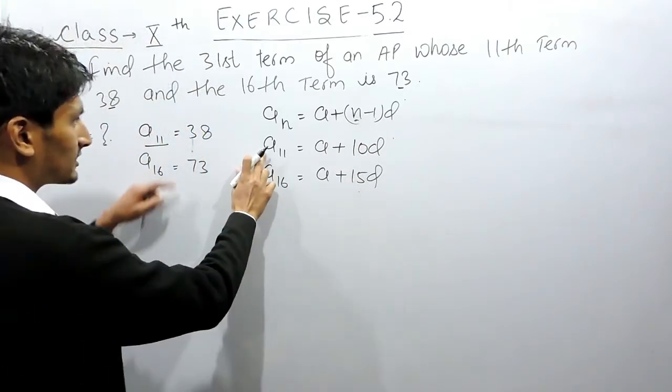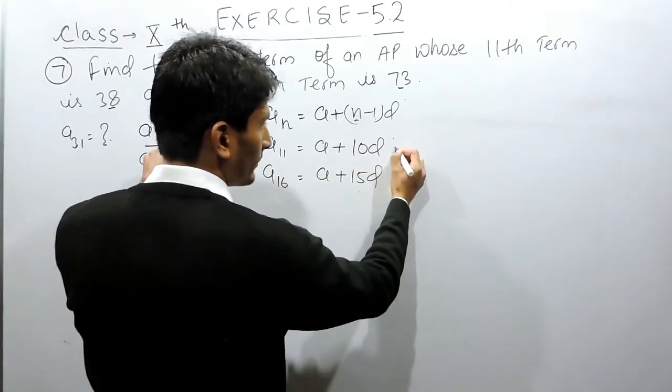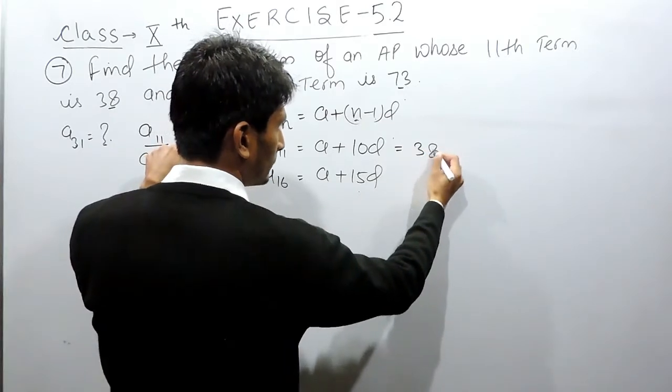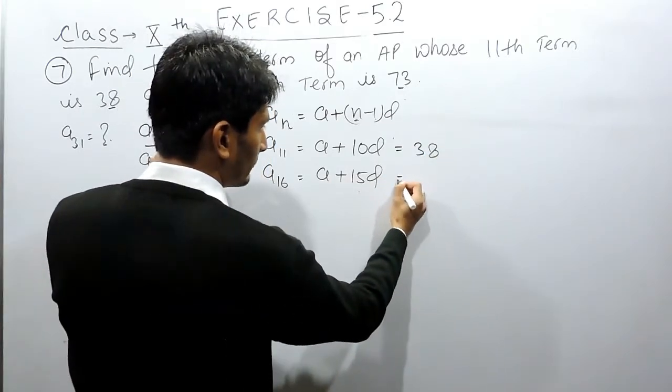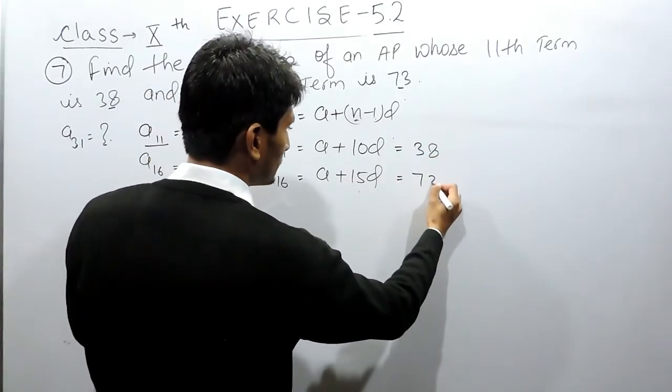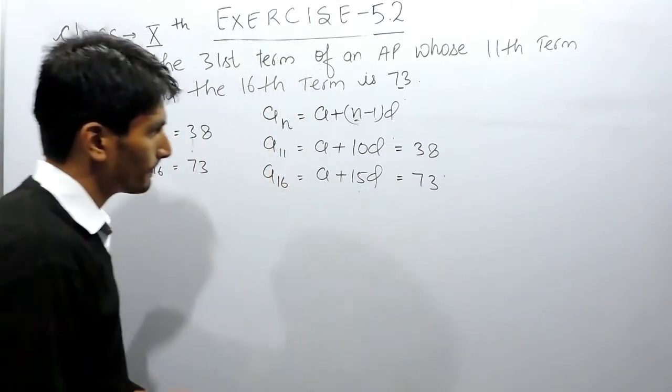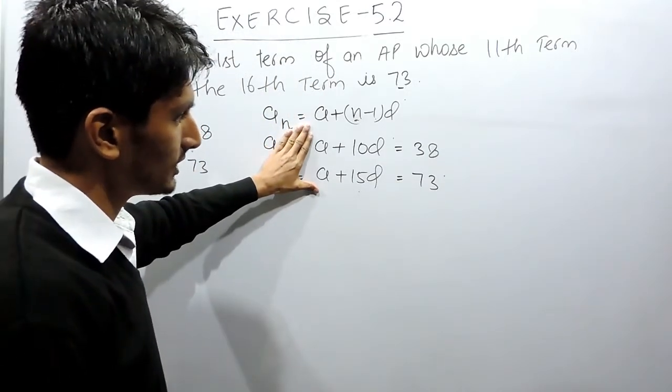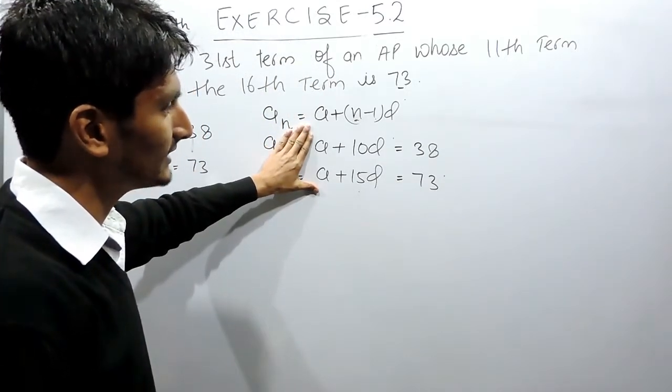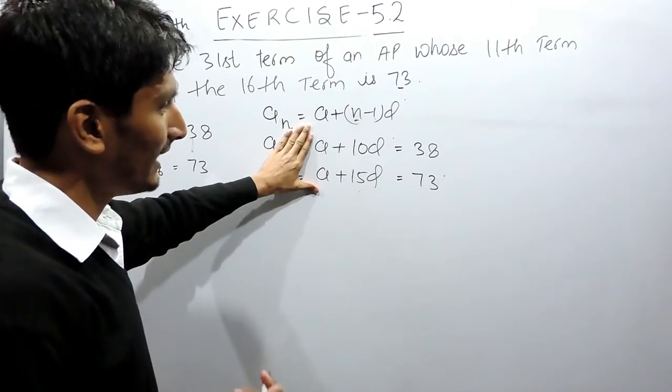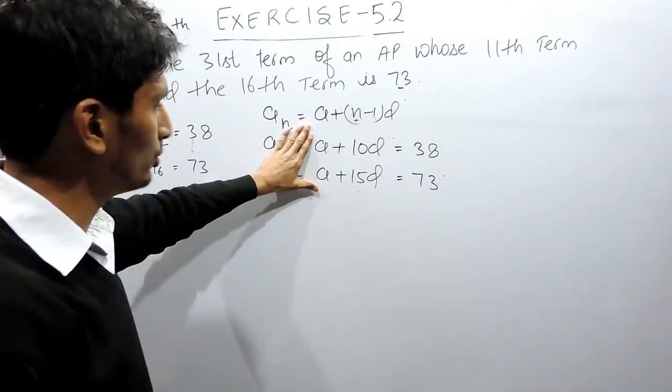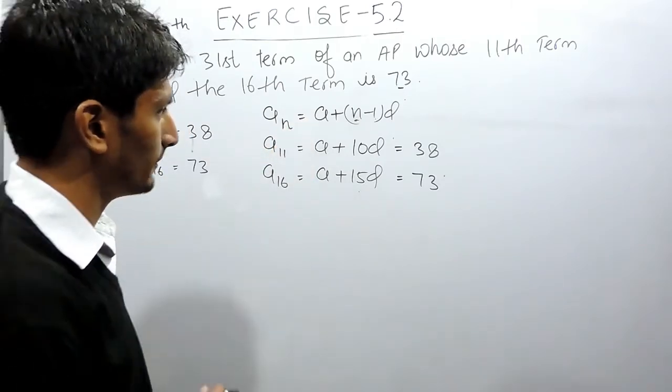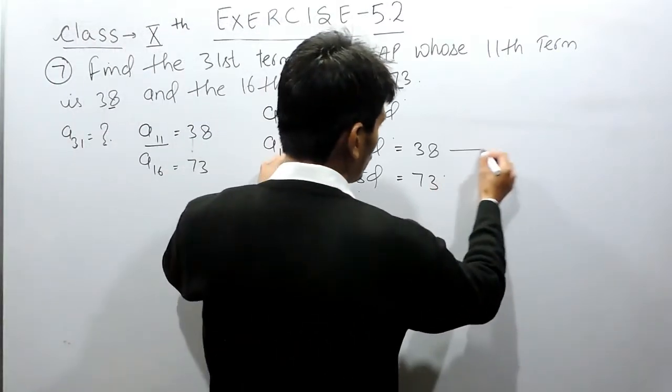And the 11th term is given to you as 38, so the value of this will be 38. And the 16th term is given to you as 73. These are the two equations. Solving these two we will get the answer of a and d, and using that value we can find out the 31st term.